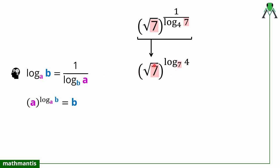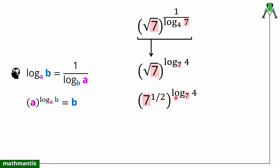Now we can see that the outer base and the logarithm base are both the same, so we can remove the log part and write the result as 4. However, the issue here is the square root of 7. Since there is a root, we write it as 7 raised to the power one-half, and this half can be moved into the exponent of the log using the property of exponents — power to a power gets multiplied — giving us one-half times log base 7 of 4.